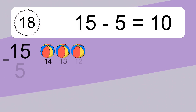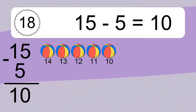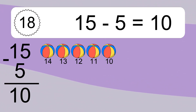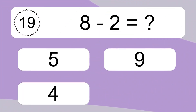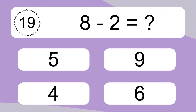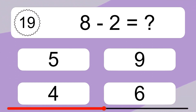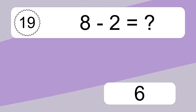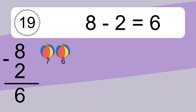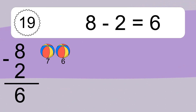15 minus 5 equals what? 15 minus 5 equals 10. Let's count it. 14, 13, 12, 11, 10. 8 minus 2 equals what? Let's count it. 7, 6.